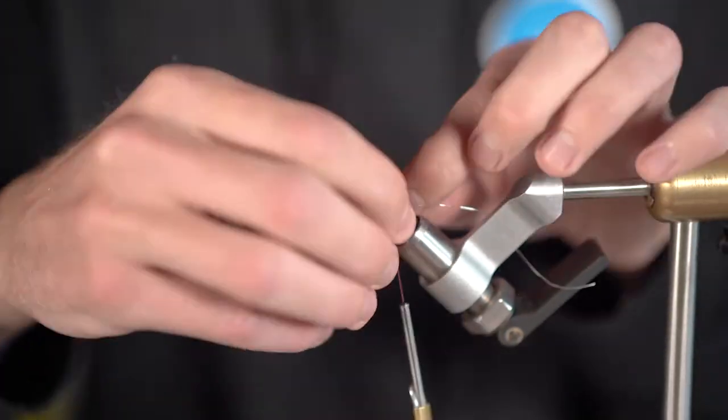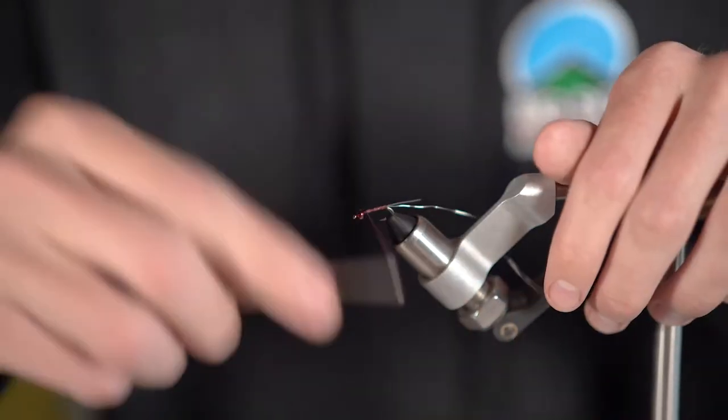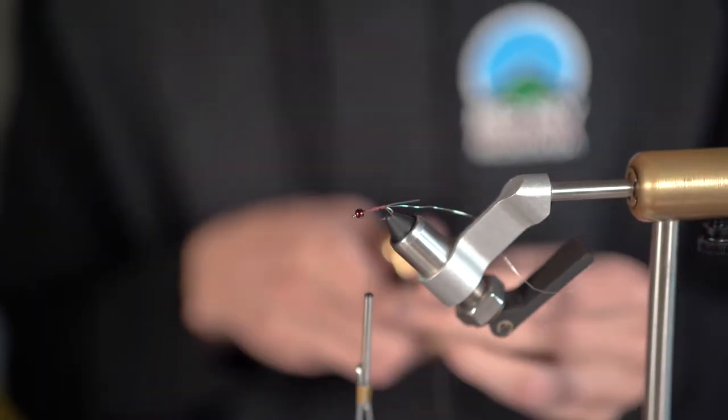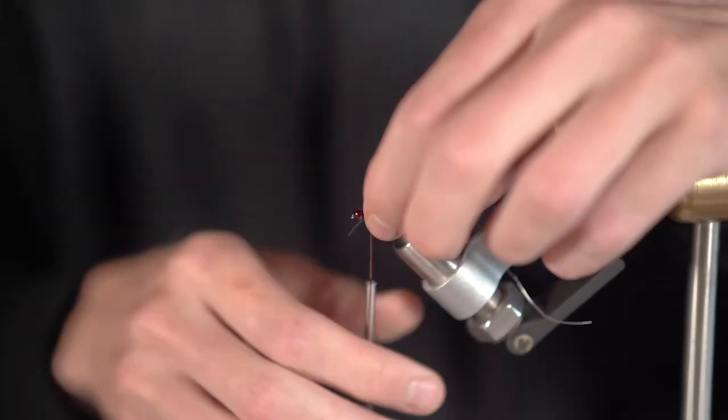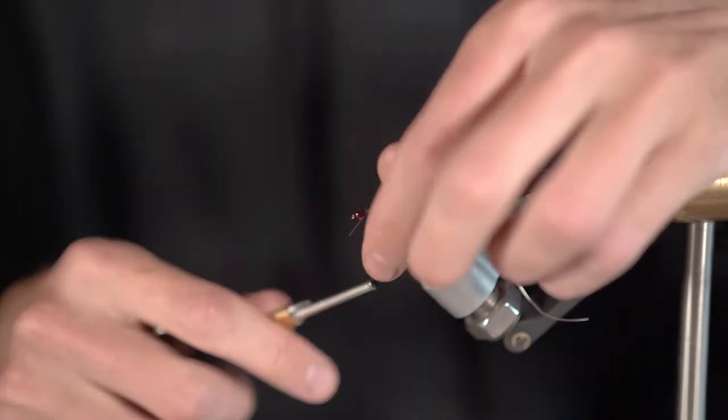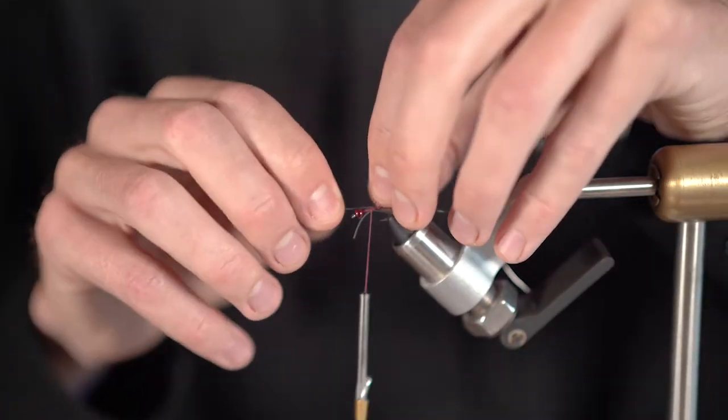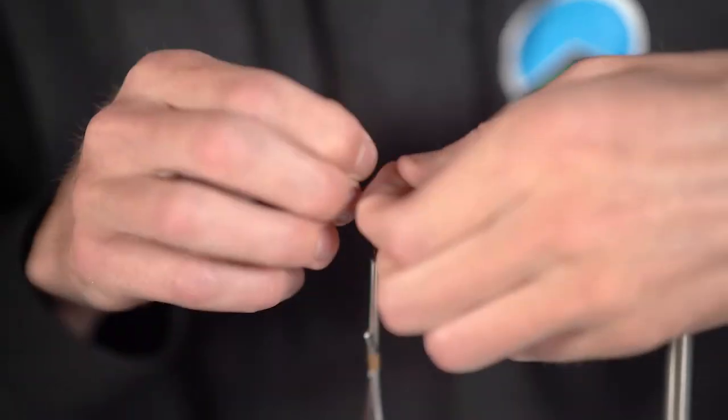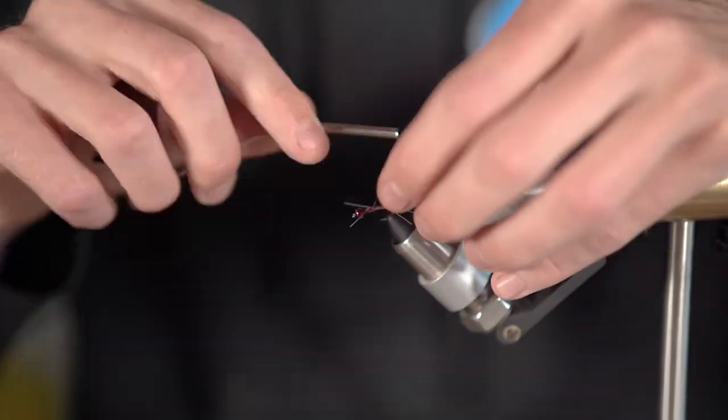Once you have that wire tied firmly to the shank of the hook, grab out your pack of round rubber legs and cut a piece off that is about two hook shanks in length. Place that piece of rubber legs on the back of the shank of the hook on top of the wire and tie it in on the middle of that piece. Then fold over the leg and tie that down.